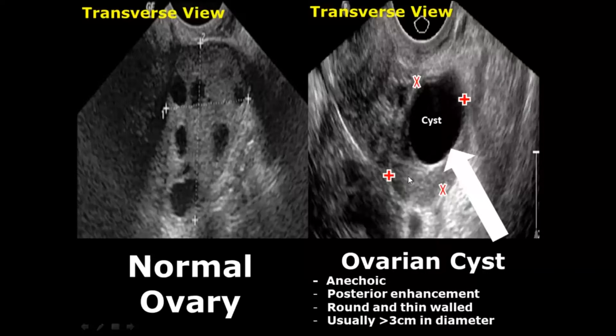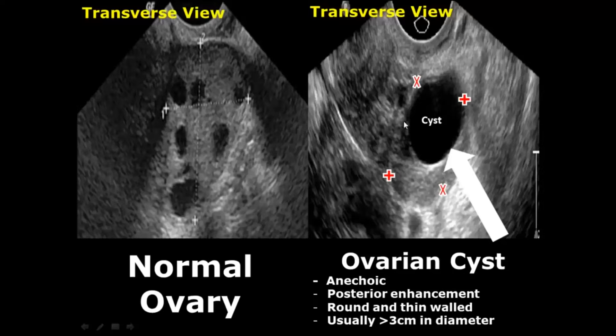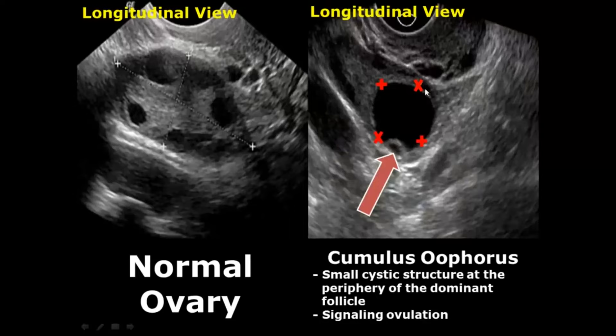Starting with the first case — ovarian cysts: these are anechoic, rounded, thin-walled with posterior enhancement, and usually more than 3 centimeters in diameter. The cumulus oophorus is a small cystic structure at the periphery of the dominant follicle and is a sign of ovulation.